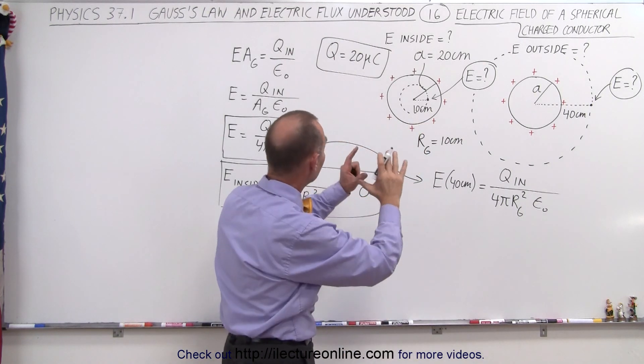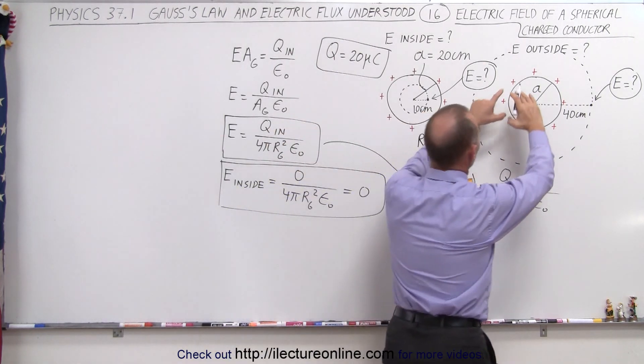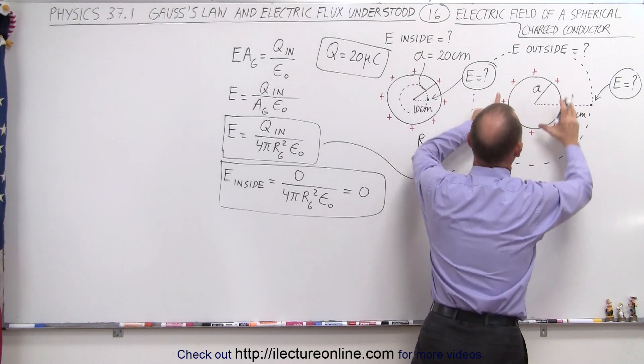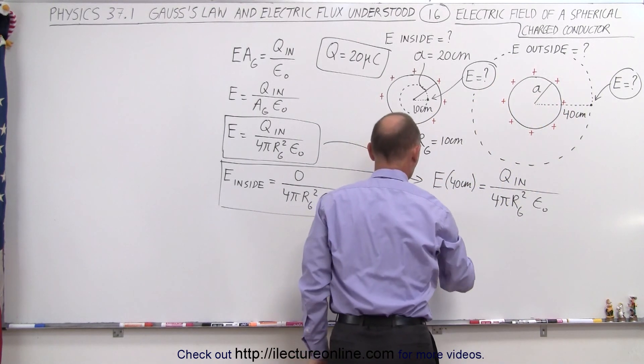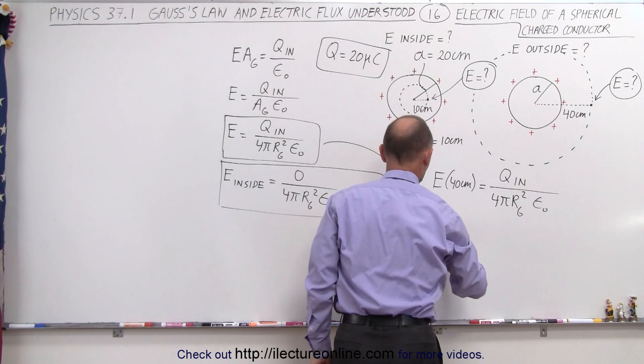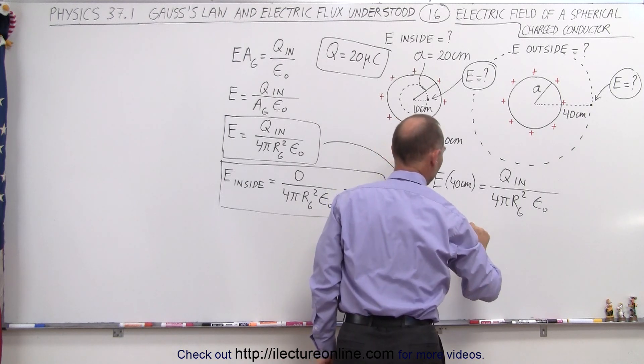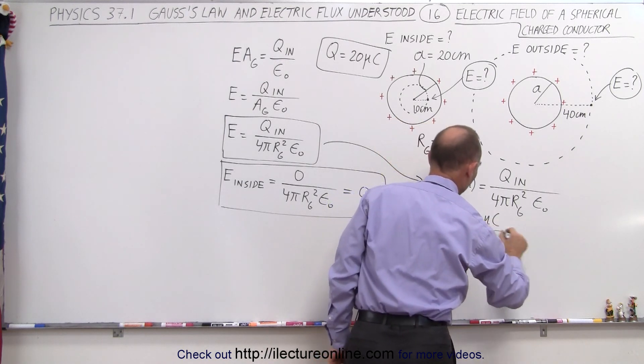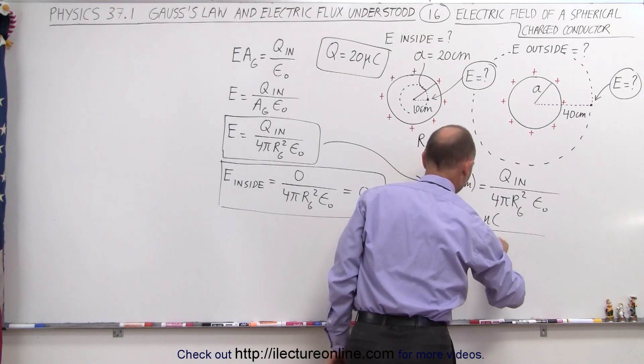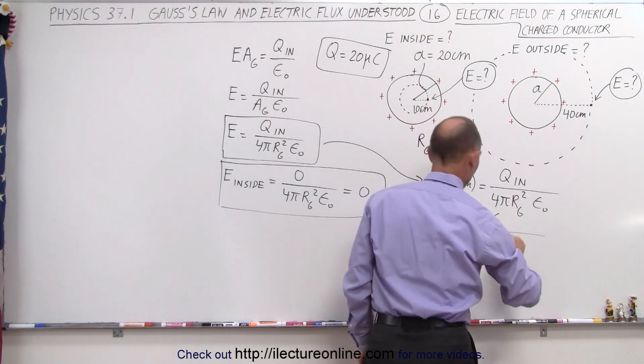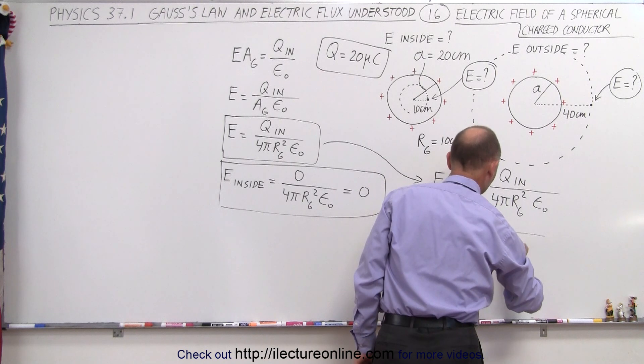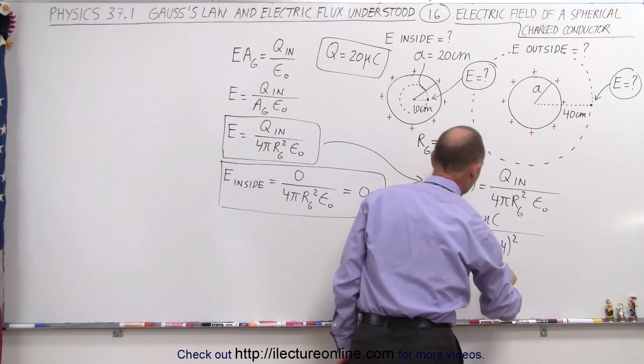So Q inside divided by 4 pi radius of the Gaussian surface squared times epsilon sub-naught. Let's write that down then, let's plug in the numbers I should say, so now of course the charge inside is all of the charge residing on the sphere, so E at 40 centimeters is equal to 20 microcoulombs divided by 4 pi times the radius, which is going to be 40 centimeters converted to meters.